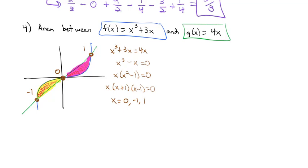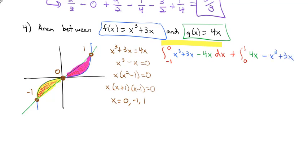We integrate from negative 1 to 0 first. The blue cubic is on top, so we start with x cubed plus 3x and subtract the lower function minus 4x dx — that gives the yellow piece. Then we add the integral from 0 to 1, where the green function is on top. So we start with 4x and subtract x cubed plus 3x, being careful of signs: minus x cubed minus 3x dx — that gives the pink piece.